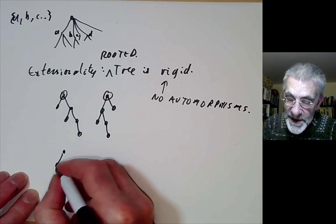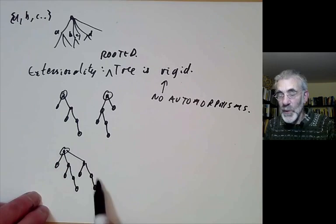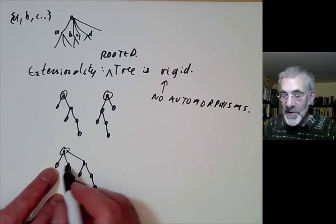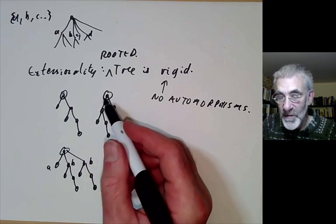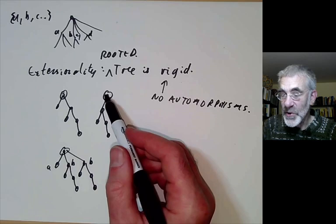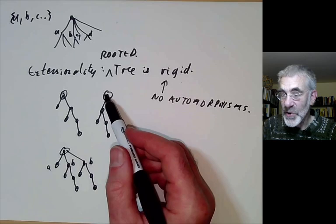So for example, if you had a set that looks like this, then there would be an isomorphism from this rooted tree to itself, because you could swap this bit with this bit. But this would correspond to a set with two copies of the same elements. So if this was A and this was B, this would also be B. So this would kind of correspond to the set A, B, B. So extensionality in terms of rooted trees, well, well-founded rooted trees, just says that the rooted tree has no non-trivial automorphisms.